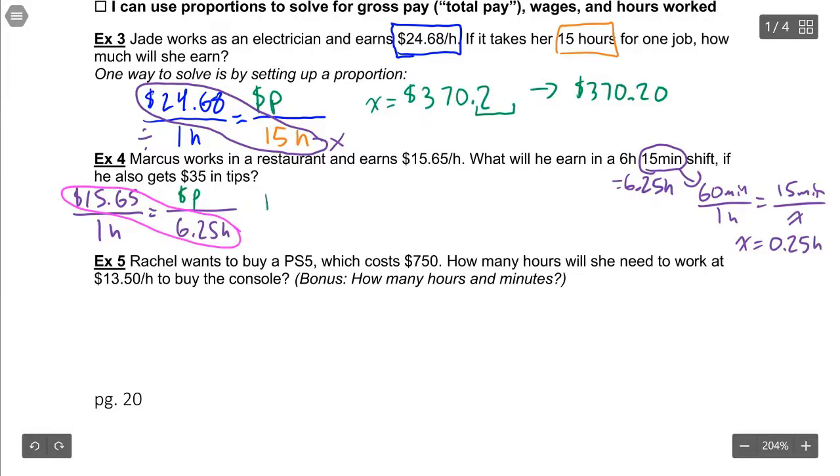Cross multiply and divide, and we get that our pay is $97.8125. Now again, this is money, we don't get to keep all those decimal places, we are going to round it to $97.81. And that's his hourly pay, but the question also says that he gets $35 in tips, so we're going to add the $35 to the $97.81, and that gives us a total of $132.81.